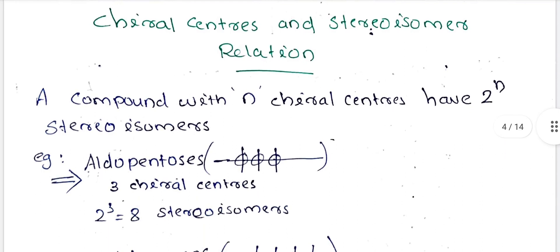Chiral centers and stereoisomer relation: a compound with N chiral centers has 2 raised to N stereoisomers. How many chiral centers does a compound have? A chiral carbon has four different groups attached to it — that is why we have a chiral group.